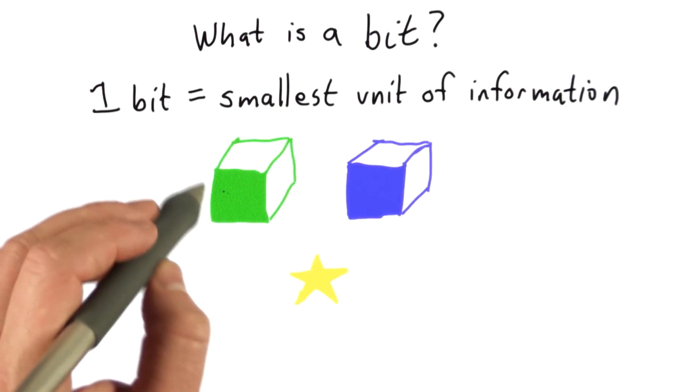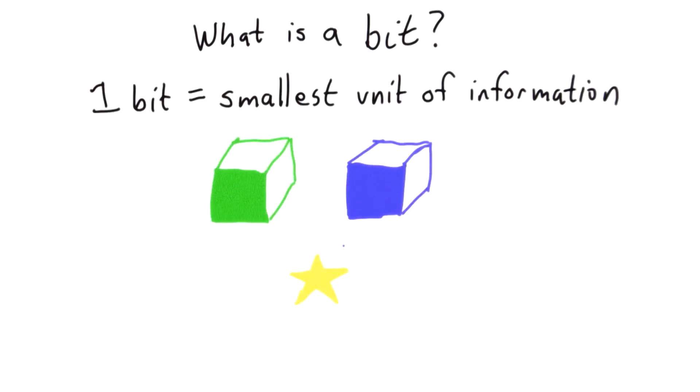Suppose I tell you that there are two boxes. There's a green box and a blue box. And in one of those two boxes, there's a gold star.